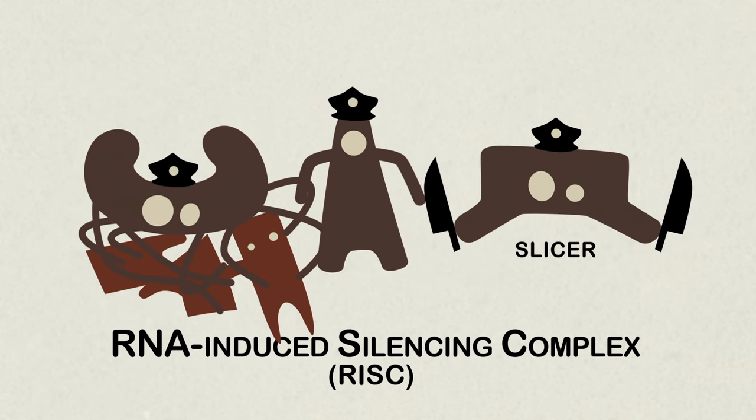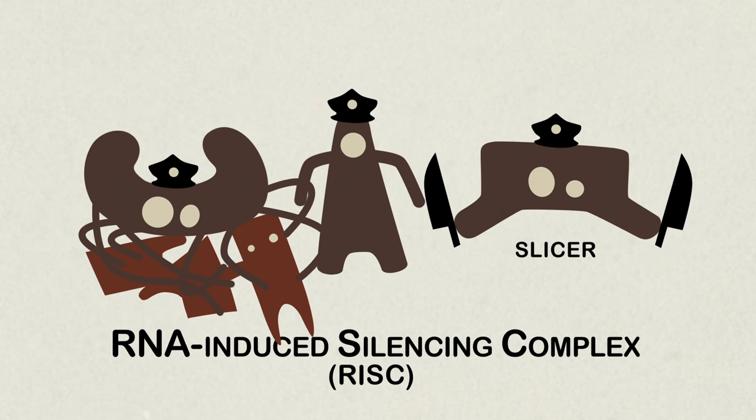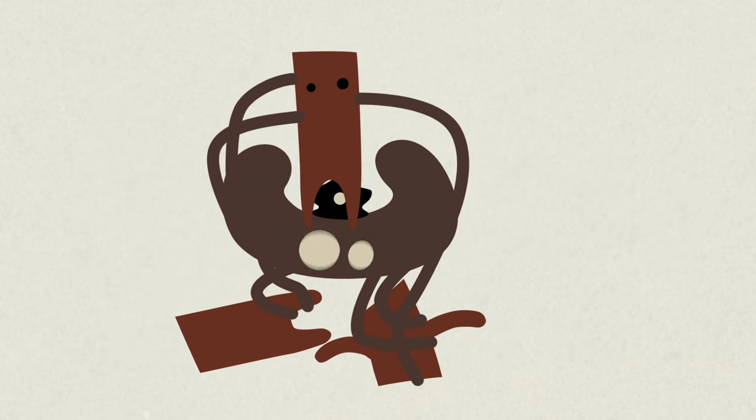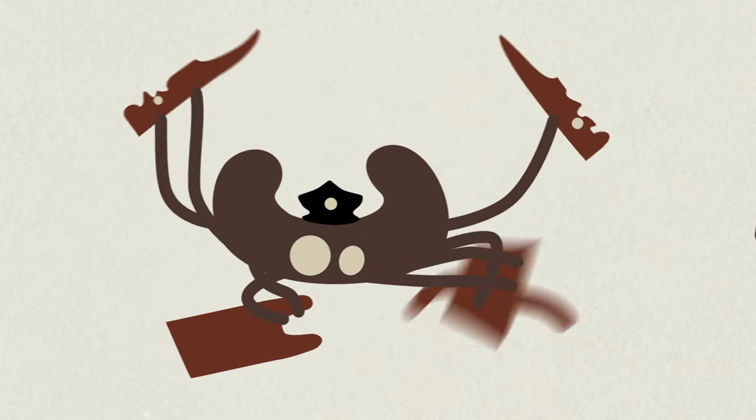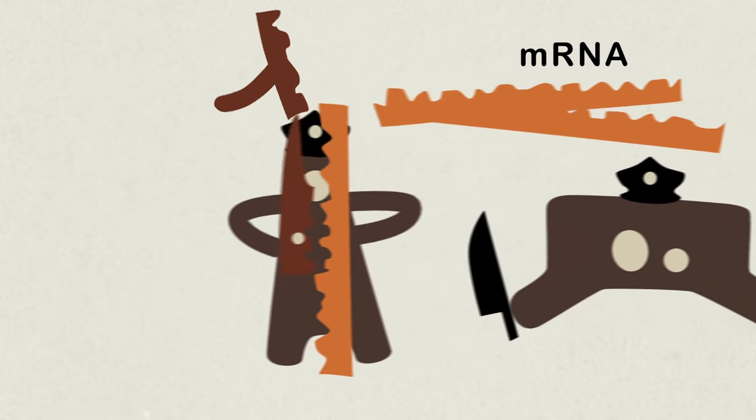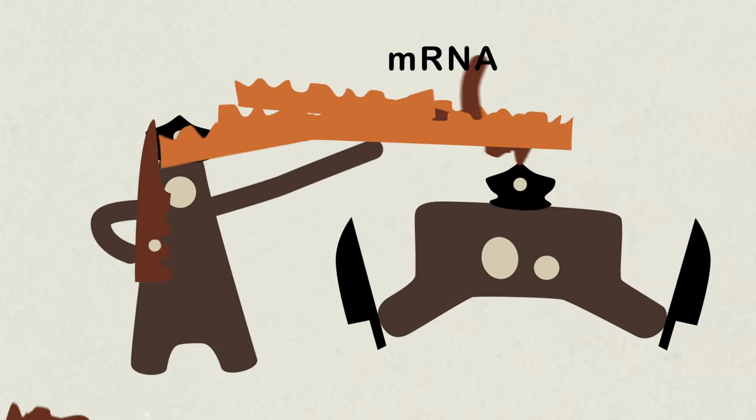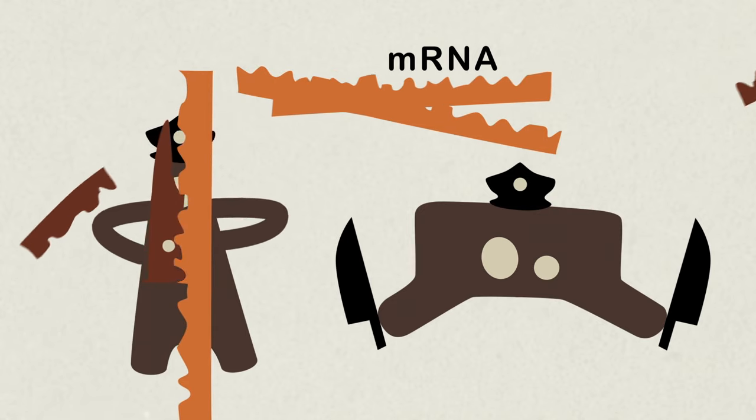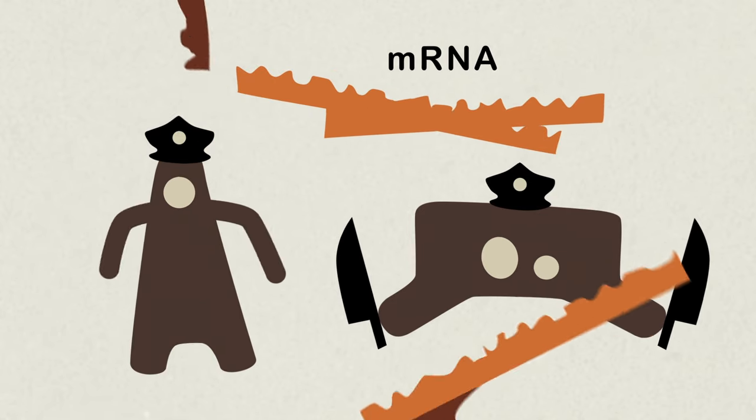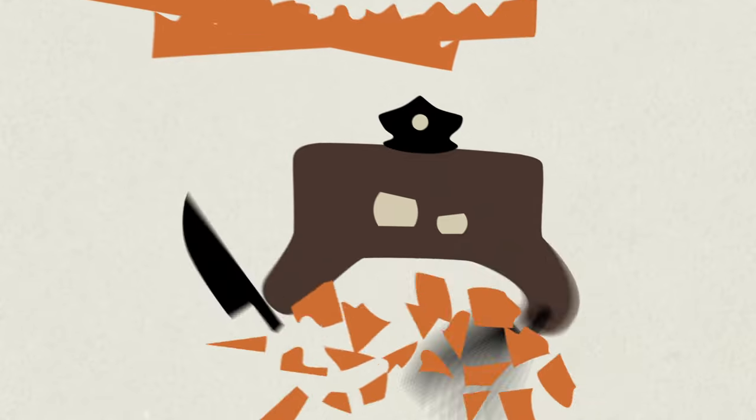This is another aptly named protein, and we'll get to why in just a second. RISC strips these small chunks of double-stranded RNA in half, using the single strand to target matching mRNA, looking for pieces that fit together like two halves of a sandwich. When it finds the matching piece of mRNA, RISC's Slicer protein slices it up.